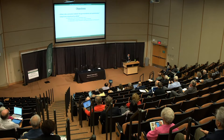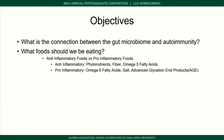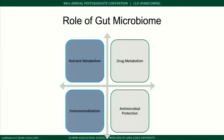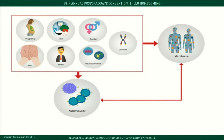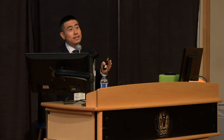Objectives for this section include looking at the connection between the gut microbiome and autoimmune disease, and examining anti-inflammatory versus pro-inflammatory foods. The gut microbiome has several functions: nutrient metabolism, drug metabolism, antimicrobial protection, and immunomodulation. The microbiome is affected by factors we cannot control — how we're born, age, genetics, infections — and factors we can control: diet, stress, sleep, and exercise. Imbalance in controllable factors, combined with genetic predisposition, can induce autoimmune disease.